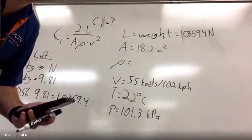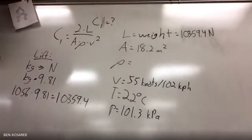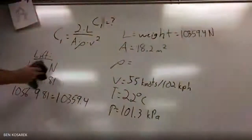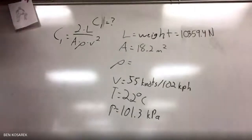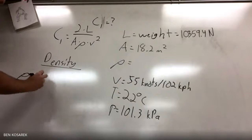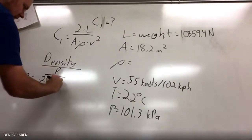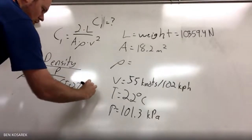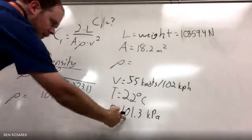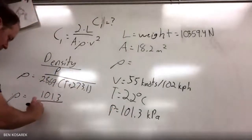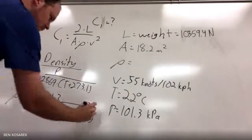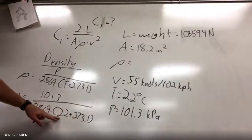Let's talk about density. To find density, we need our formula from the other day: rho equals pressure over 0.2869 times temperature plus 273.1. We know our pressure is 101.3 and our temperature is 22.